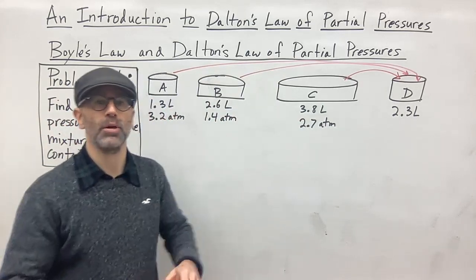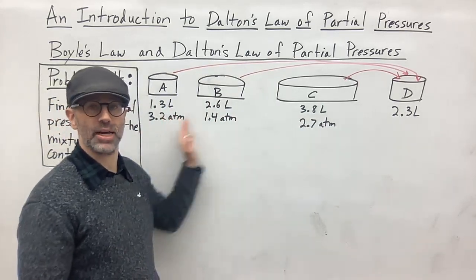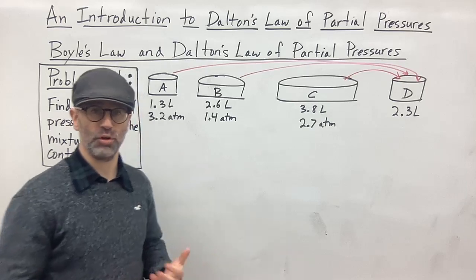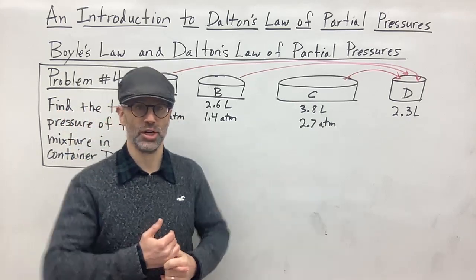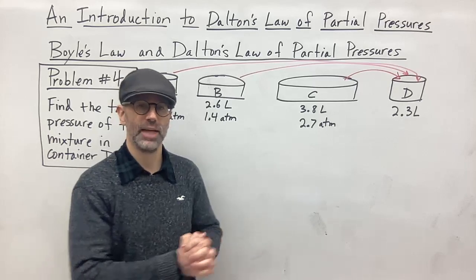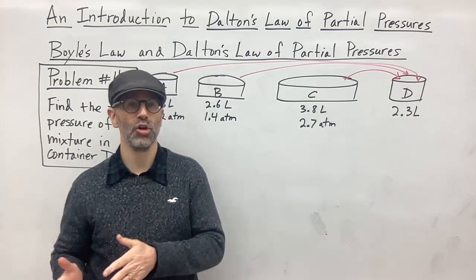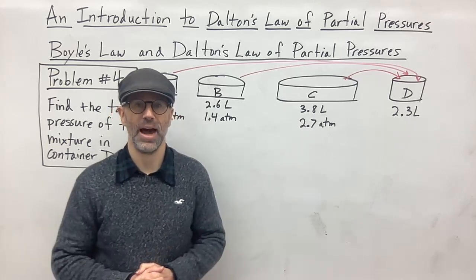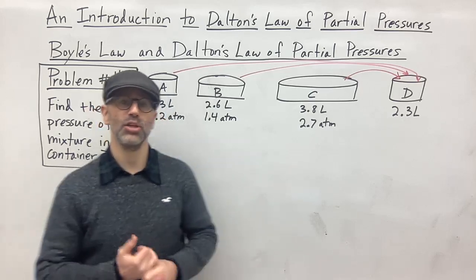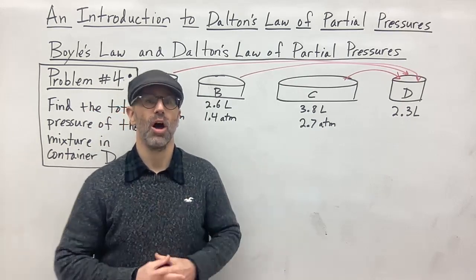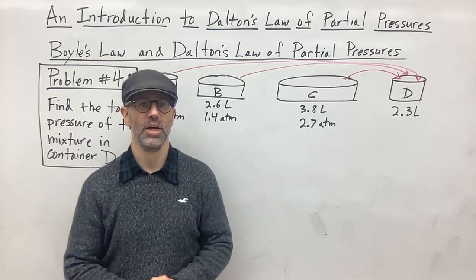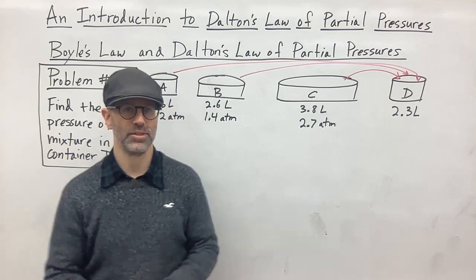Just like the previous problem, since we have gases moving from one container to another and the volume changes, according to Boyle's Law — assuming temperature and amount of gas remain constant — the change in volume leads to a change in pressure. So we need to calculate the new pressure for each gas in container D first, then use Dalton's Law of Partial Pressures to add those partial pressures together to get the total pressure.